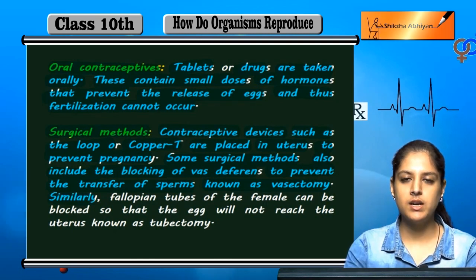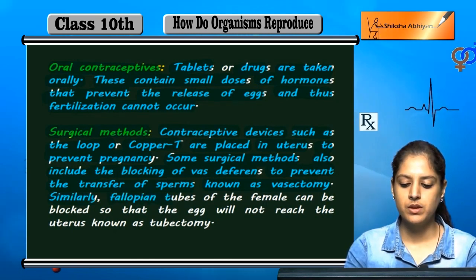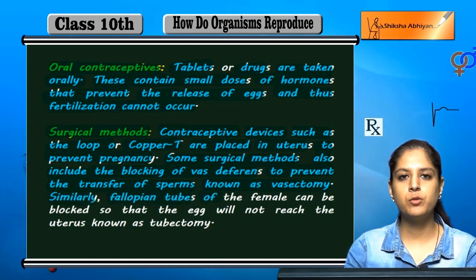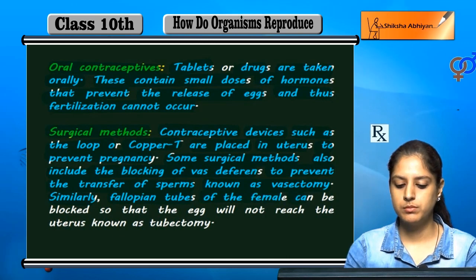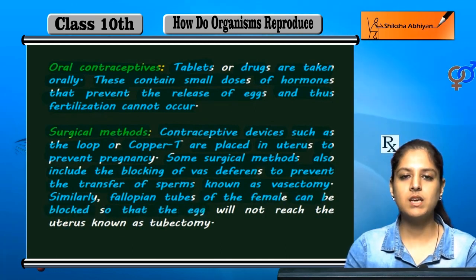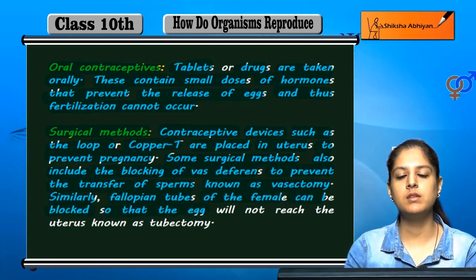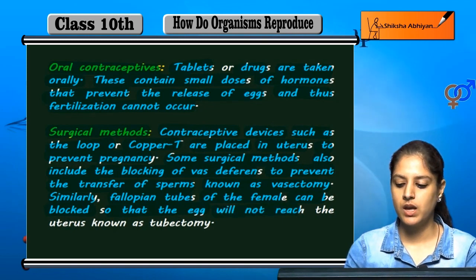Similarly, in females, the fallopian tube can be blocked so that the egg cannot travel and meet the sperm, and therefore fertilization will not occur. This procedure is called tubectomy.